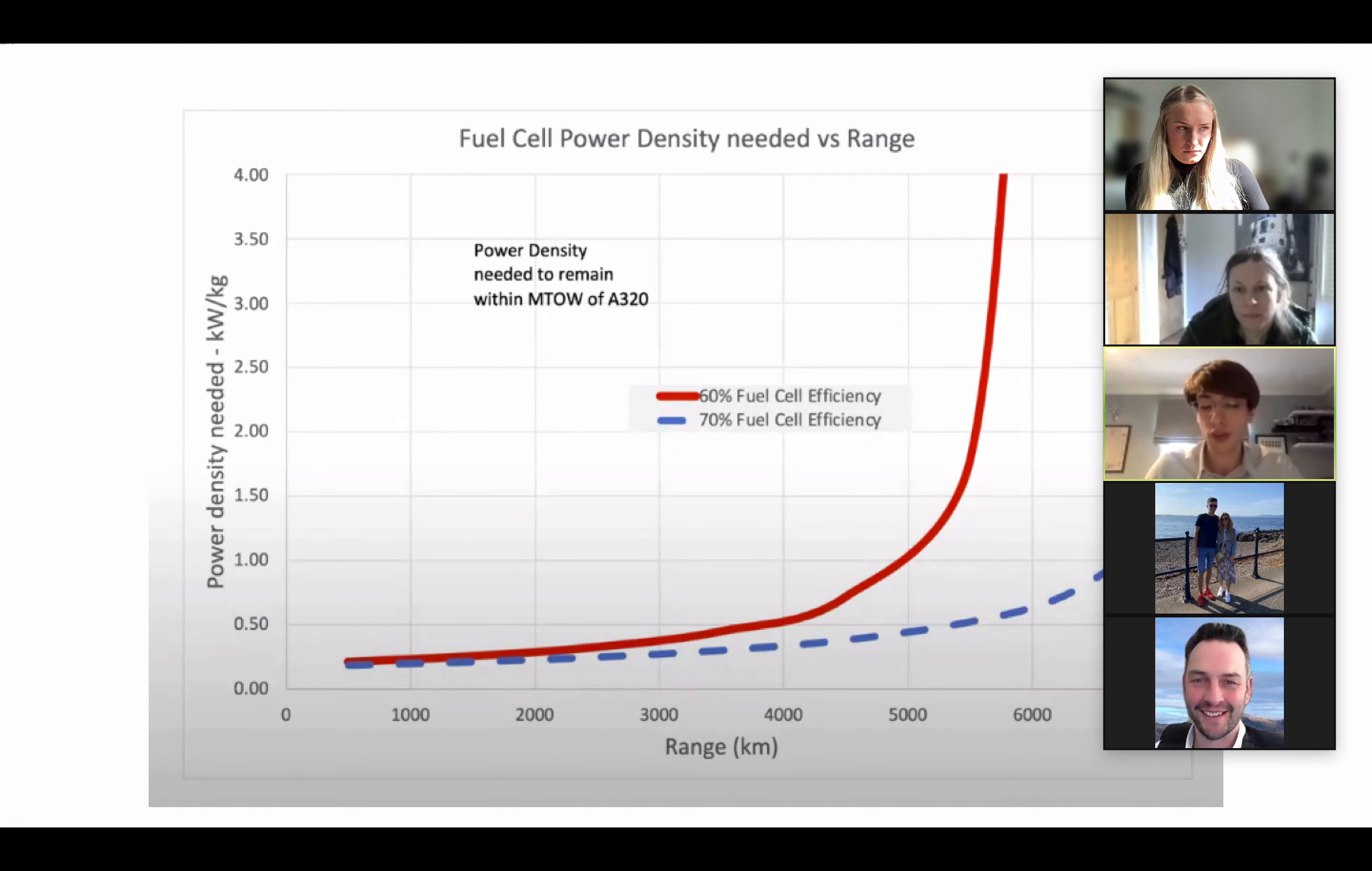So a purely green ammonia aircraft will likely only work for shorter haul flights, by which I mean across Europe, mainland United States, a lot of Asia as well. So this brings us on to the final topic, which is fuel cell efficiency. Naturally, you want it to be as efficient as possible to increase the range of the ammonia-fuelled aircraft.